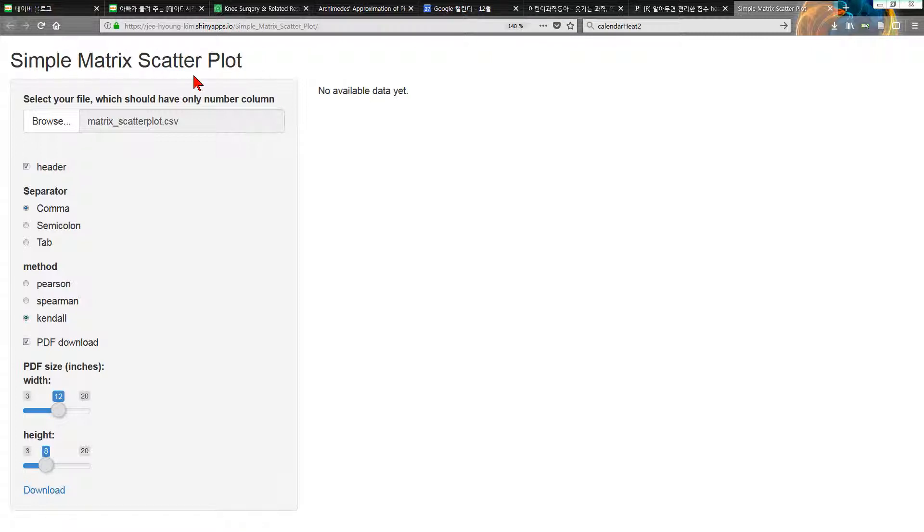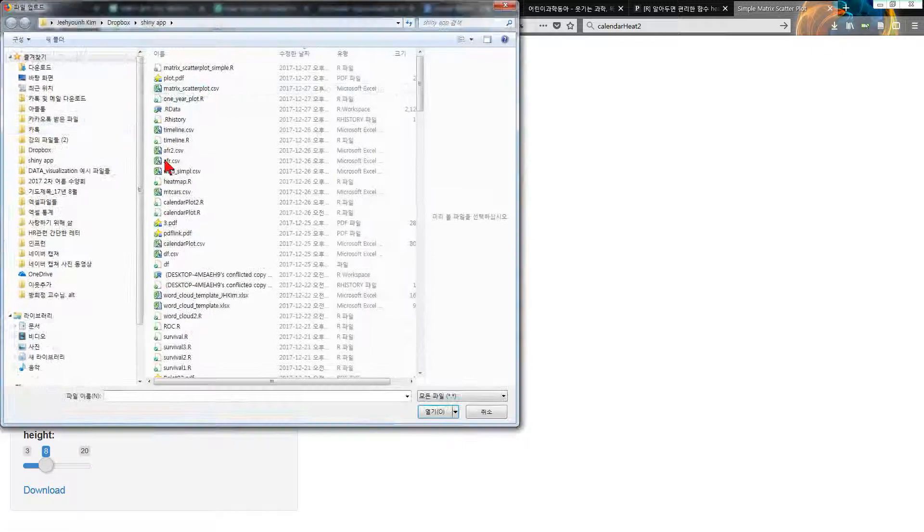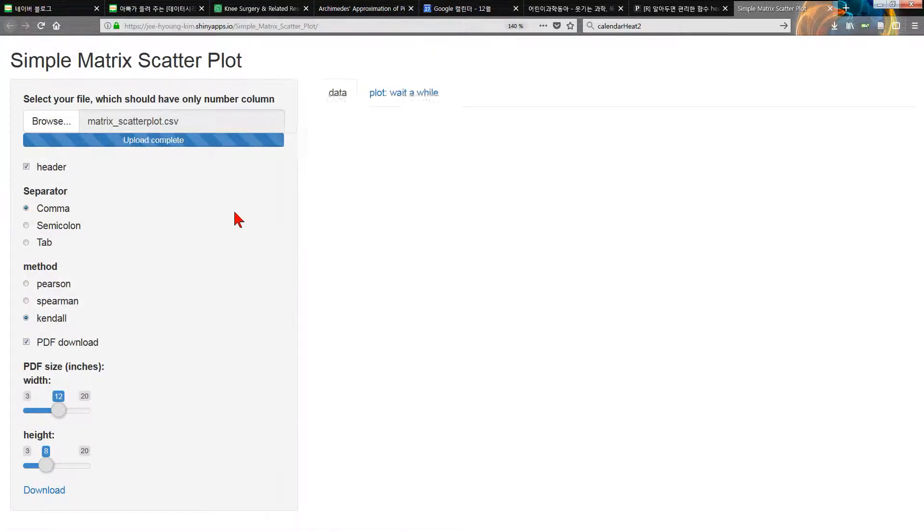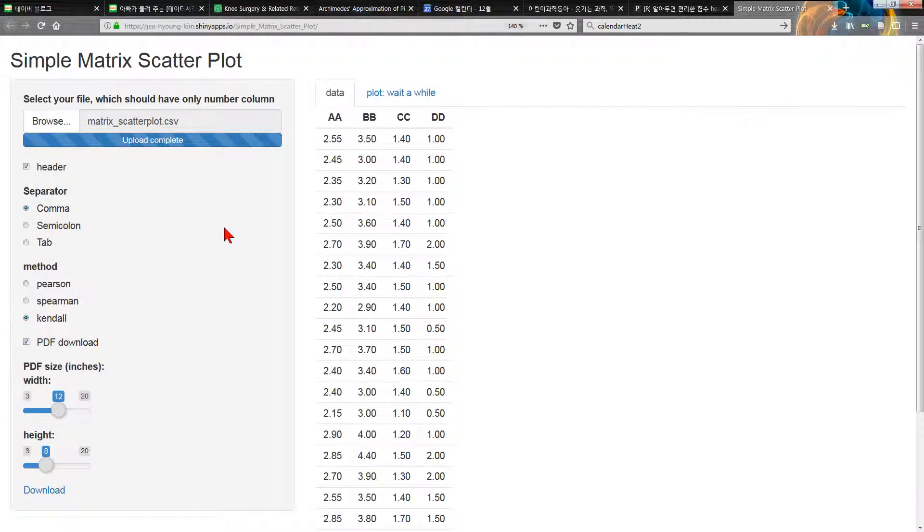You select your file, which should have only number column. For example. Only CSV file can be done. It is very easy to make CSV file with your Excel program. Microsoft Excel. Save as CSV file. Sometimes it cannot be seen. Then you can select like this way.